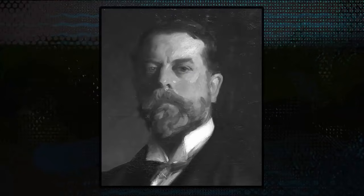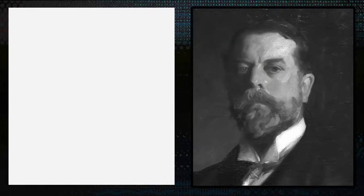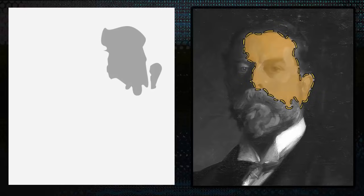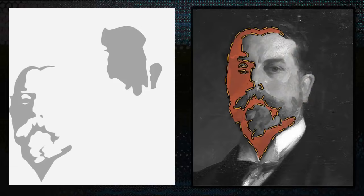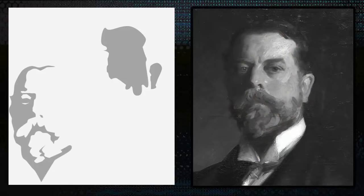This self-portrait by John Singer Sargent looks very sophisticated, and it is. But I want to show you how, with good shape design as the backbone of your painting, you too can aspire to this level. In this study, the first thing I'm going to do is break down the shapes. The biggest shapes are usually the most obvious, like this piece of light covering most of his face, and a gigantic shadow shape responsible for the entire shadow side. Note: I'm not trying to use any values yet — I am just looking at shape.